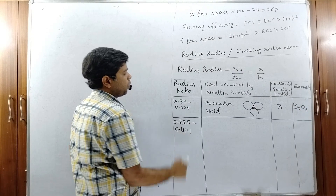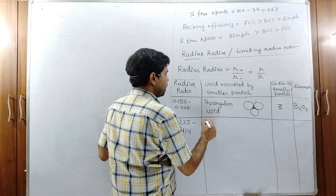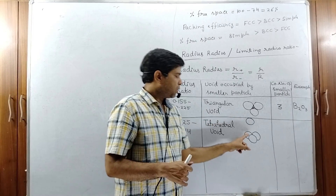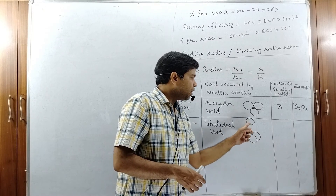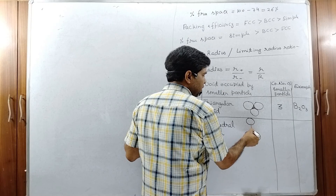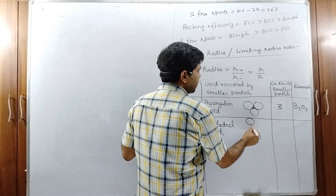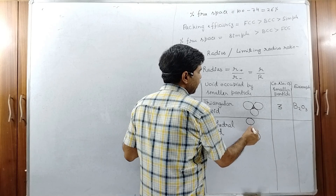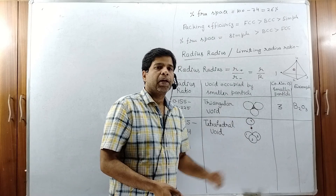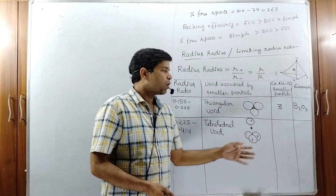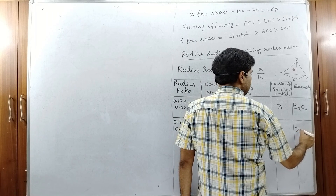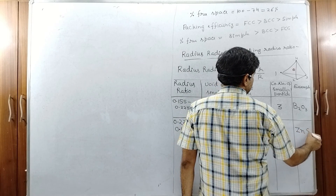When the radius ratio is 0.225 to 0.414, the smaller particle occupies a tetrahedral void. Three particles of layer one are covered by one particle of layer two, creating one vacant space among these four particles called the tetrahedral void. The red particle is surrounded by four black particles, so the coordination number is four. An example is ZnS.